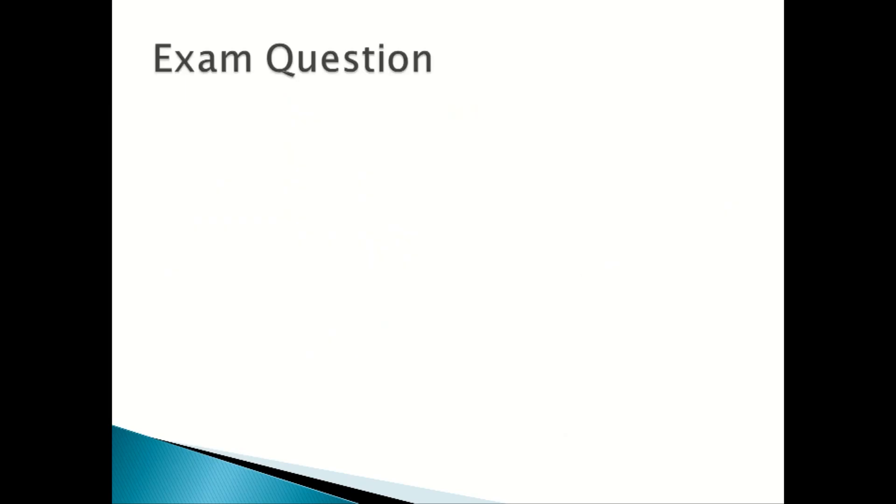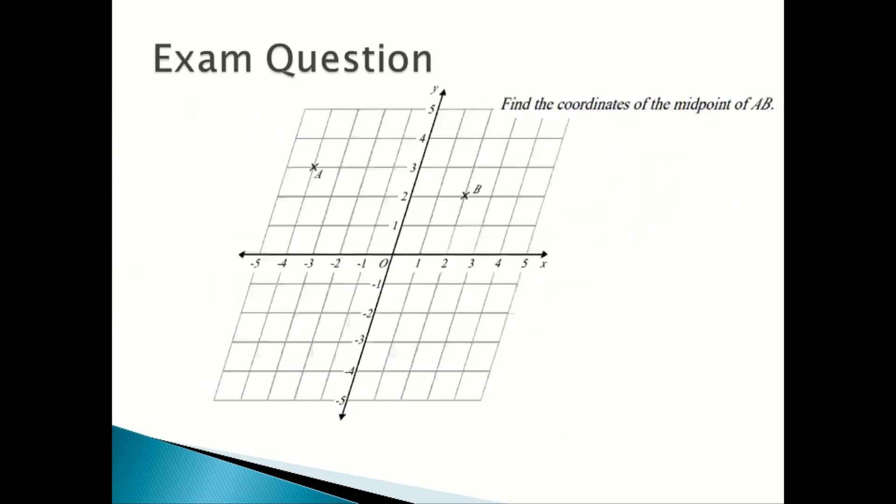Now we're going to look at an exam question. Find the coordinates of the midpoint of AB. First, you write down the coordinates of A and B. A is (-4, 3) and B is (2, 2).